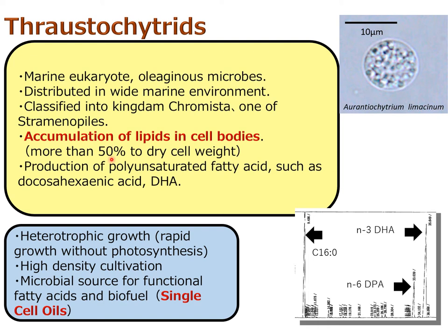In some species, or by adjusting culture conditions, we can increase the oil content to more than 50% of dry cell weight. When we analyze the lipid and look at the fatty acid profiles, they can produce functional fatty acids such as DHA, which is very famous as a nutritional supplement for maintaining health. This is a gas chromatograph result showing fatty acid composition — each peak represents one fatty acid.